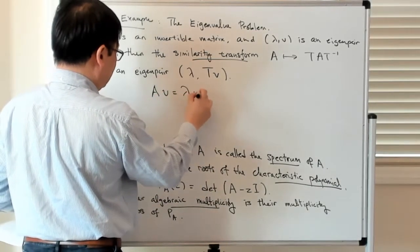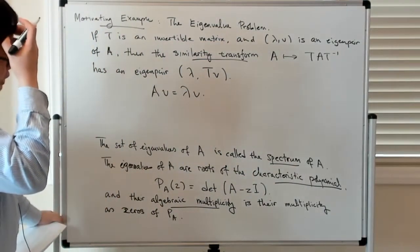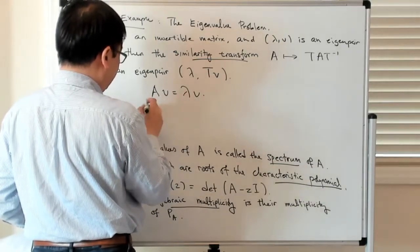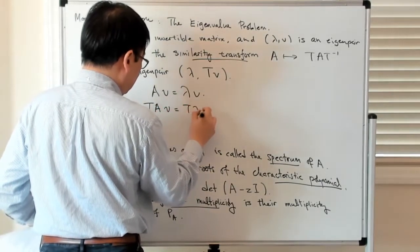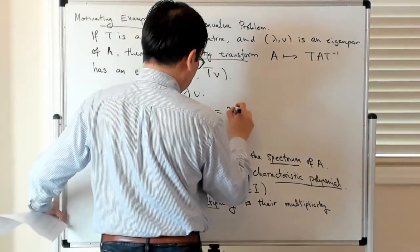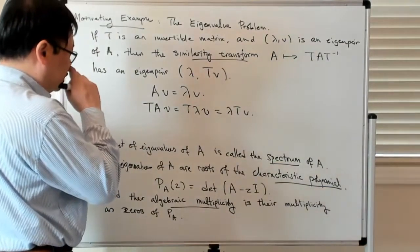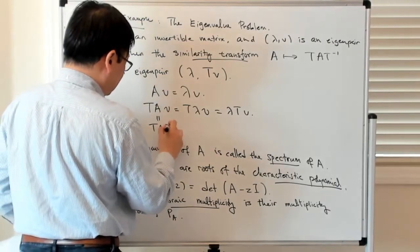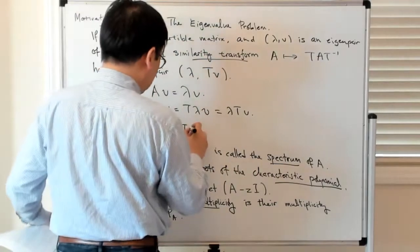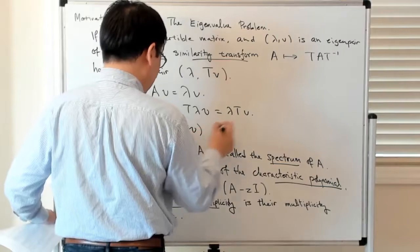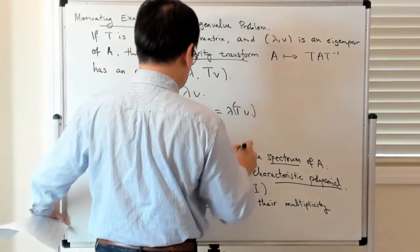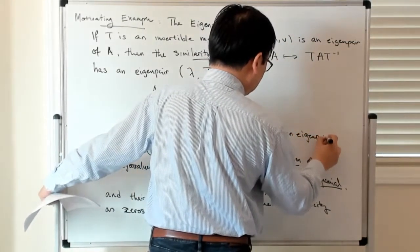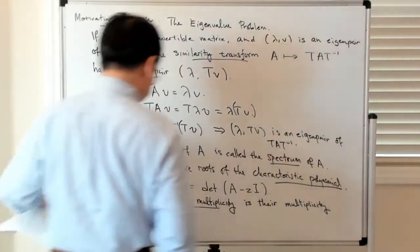You can see this straightforwardly. If A times V equals lambda V, I can multiply on the left by T. So I have T A V equals T lambda V, and since lambda is a scalar, that's lambda T V. Inserting T inverse T — the identity — gives T A T inverse acting on T V equals lambda T V. So lambda and T V is an eigenpair of T A T inverse.